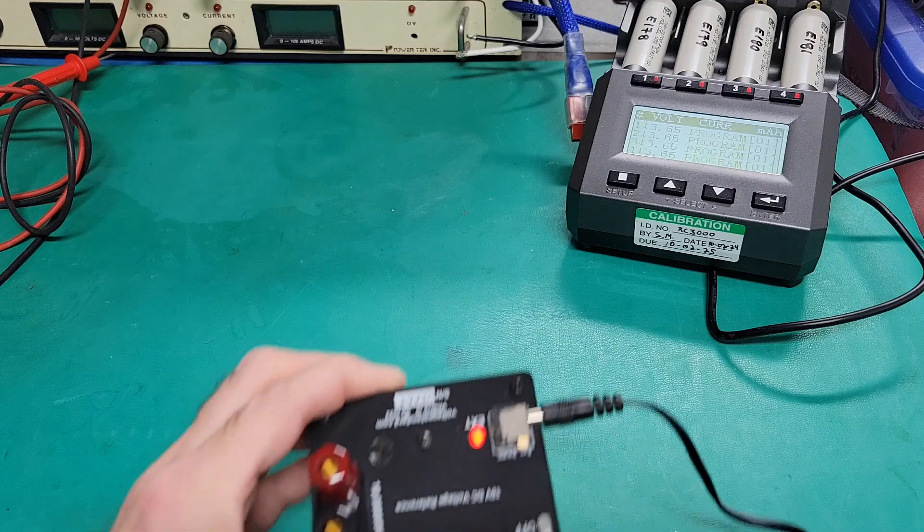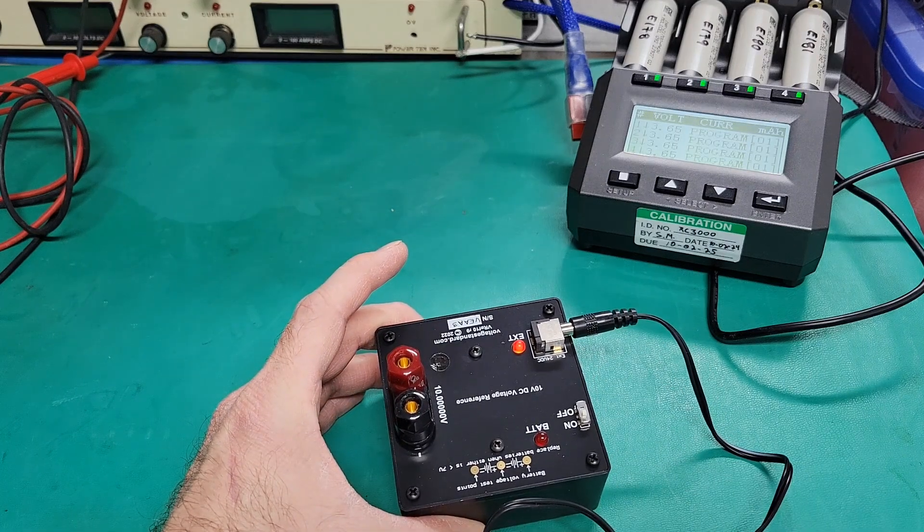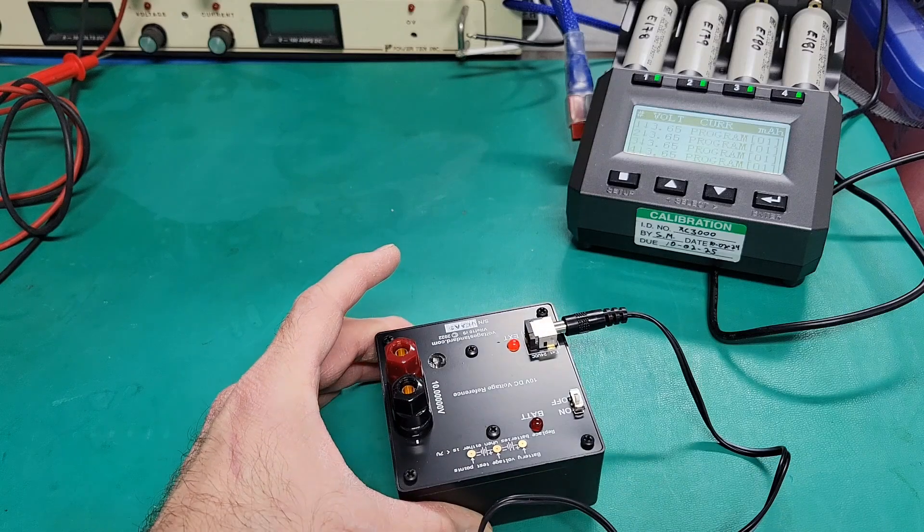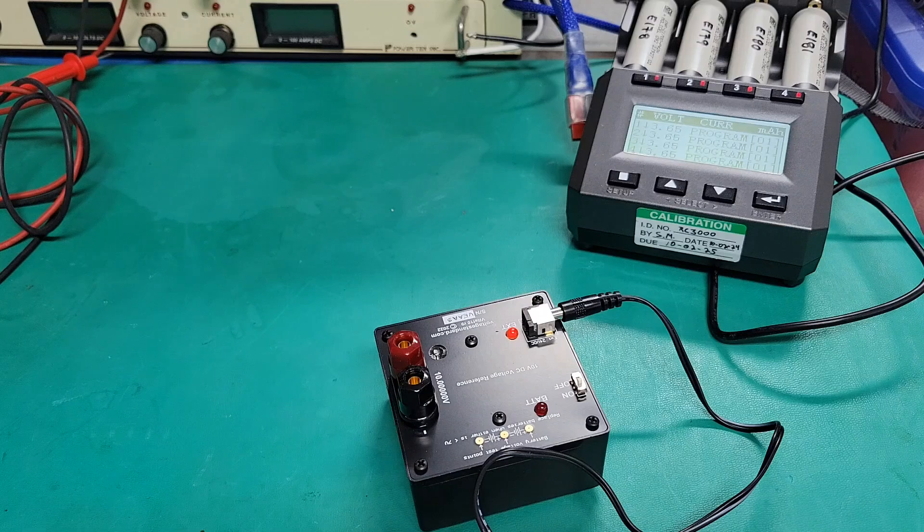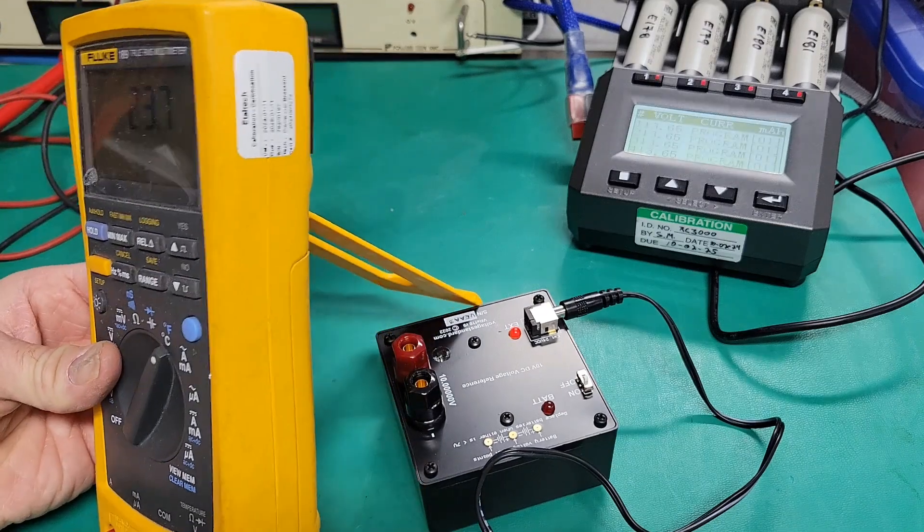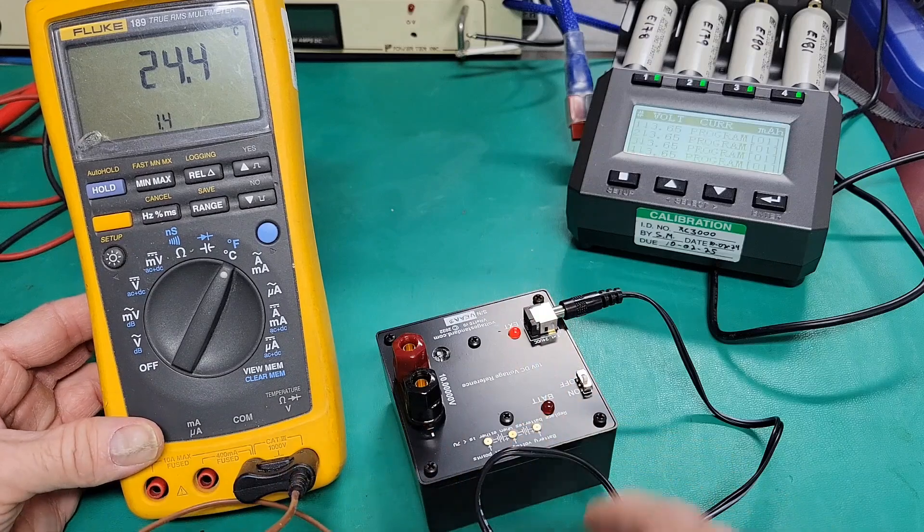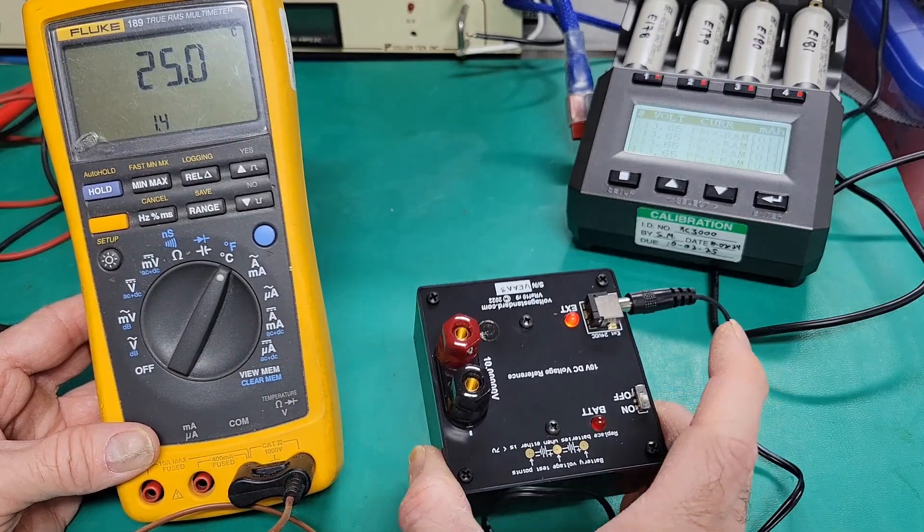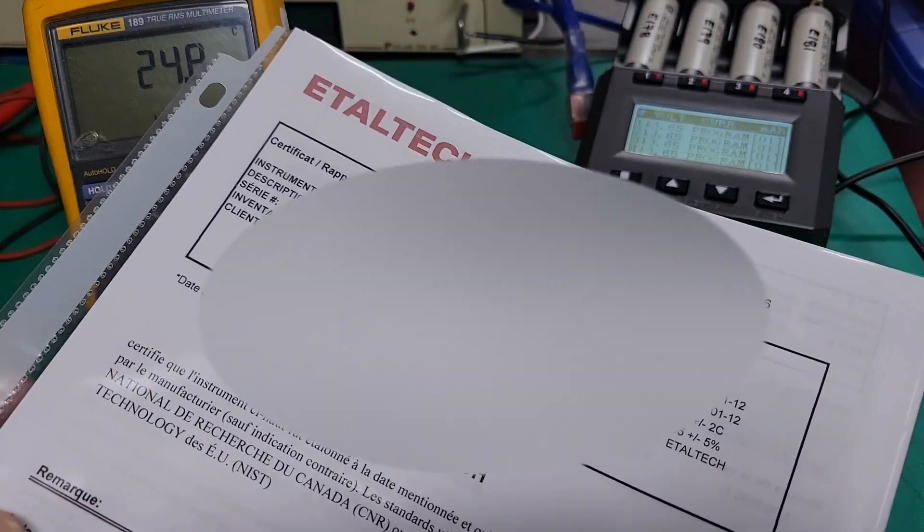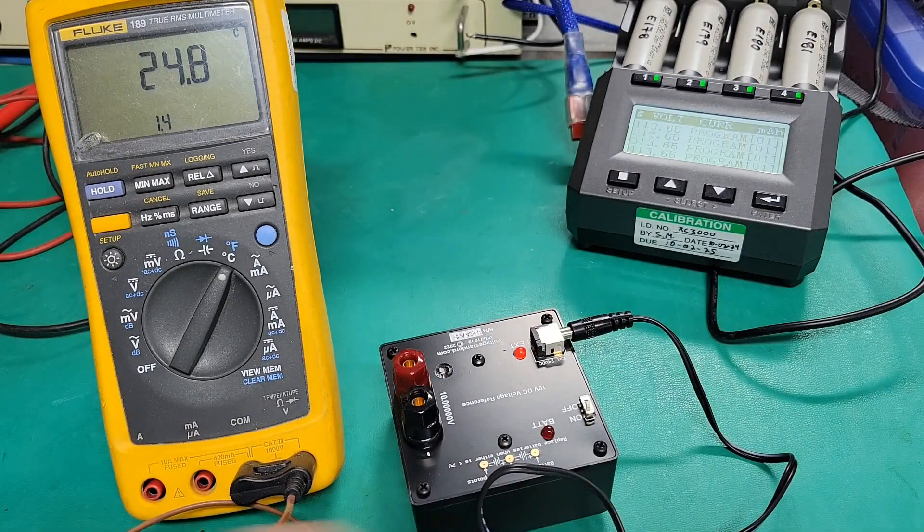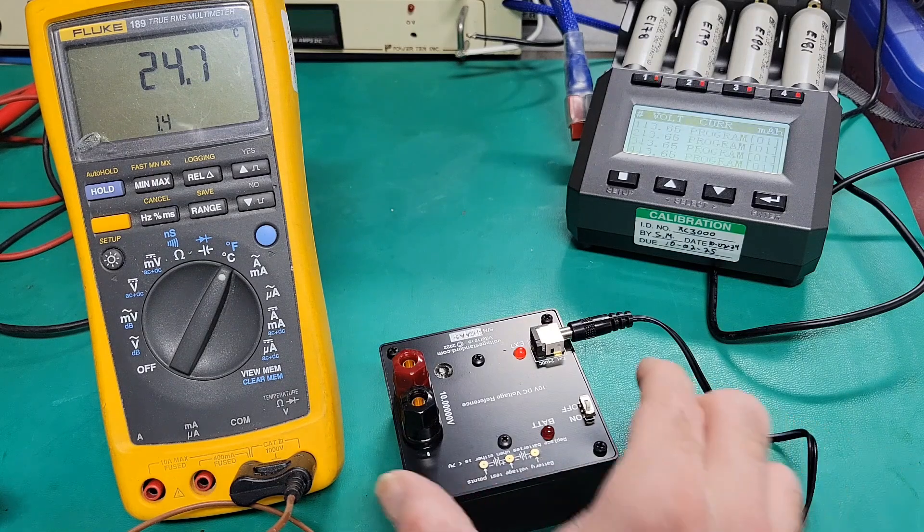So first of all, we will use this voltage reference to measure if my Agilent precise voltmeter is accurate. And to make sure that this one is in the right range of temperature, I will use also this calibrated multimeter with the temperature probe to make sure that the temperature at which I'm operating this voltage reference is right. I have the calibration paper here with the calibration curve and the compensation curve.